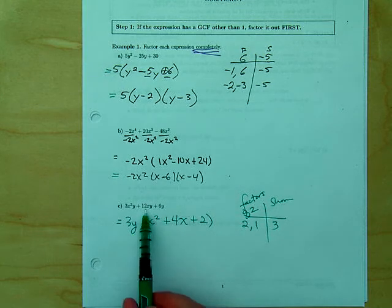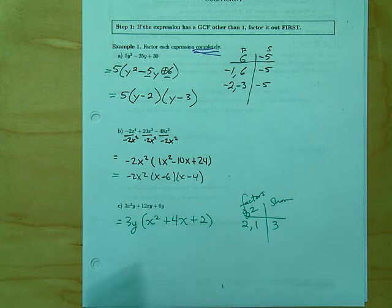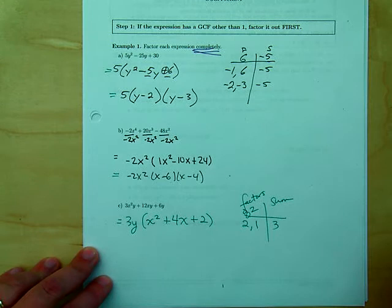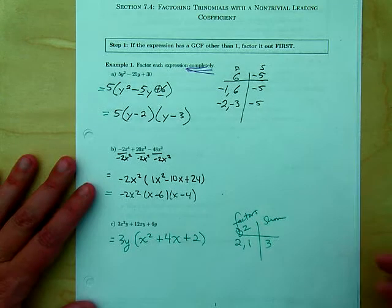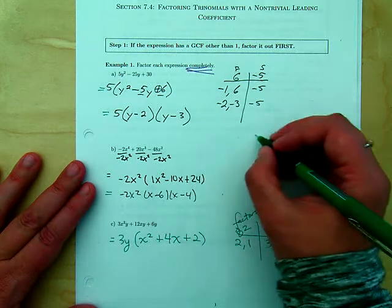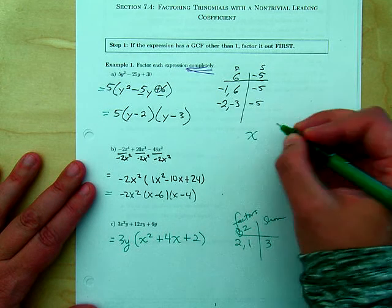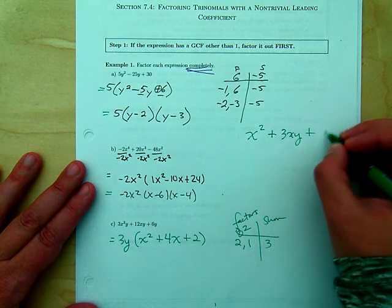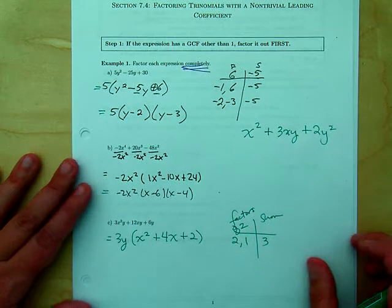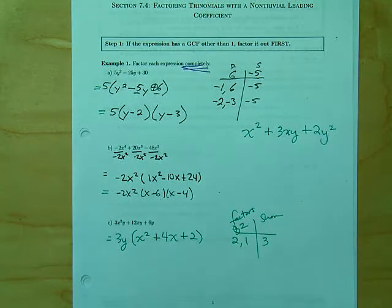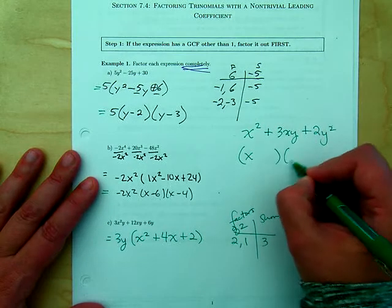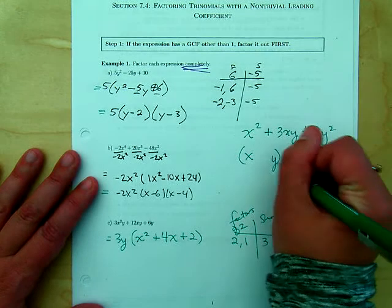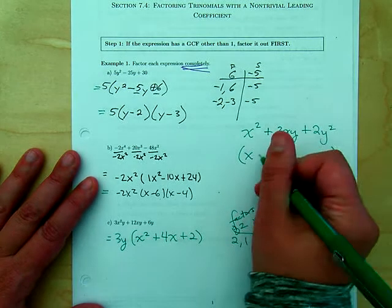3 divides into everything, so we double-check: 6 and 2 — that makes sense. What's left inside is actually prime and can't be factored any further. Some of the problems you were asking about looked like this: x² + 3xy + 2y². What do we do about that? Well, x times x still gives us x².